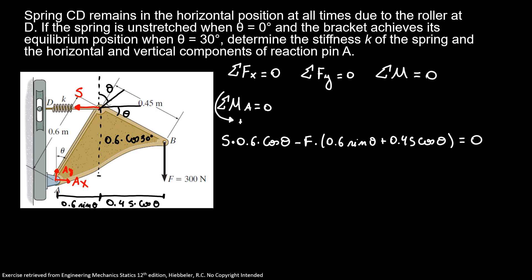So here I know that my S equals 300 times 0.6 sine of theta plus 0.45 cosine of theta, divided by 0.6 cosine of theta. So my S will be 398.2 newtons. So I discovered my spring force.